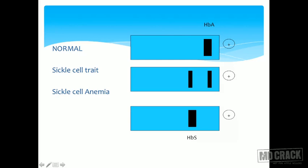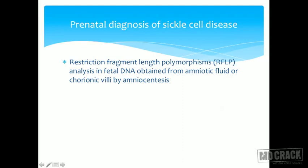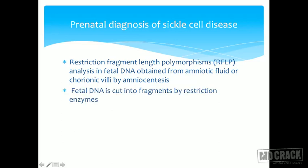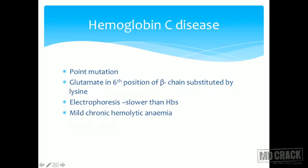On cellulose acetate electrophoresis, a normal patient shows only HbA moving faster to the anode; a sickle cell trait patient shows both HbA and HbS bands; and a sickle cell anemia patient shows only HbS, which moves slower than HbA. Prenatal diagnosis can be done by RFLP — restriction fragment length polymorphism analysis of fetal DNA obtained from amniotic fluid or chorionic villi by amniocentesis. The fetal DNA is cut by restriction enzymes and fragments are separated by electrophoresis.